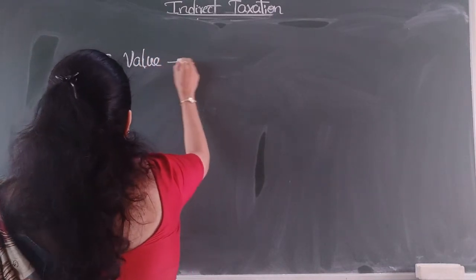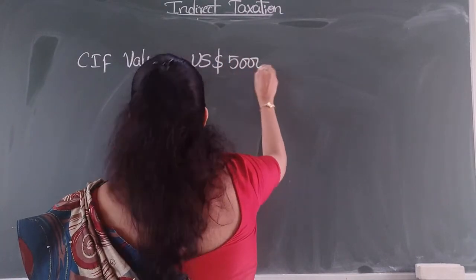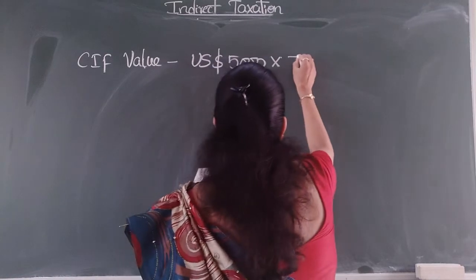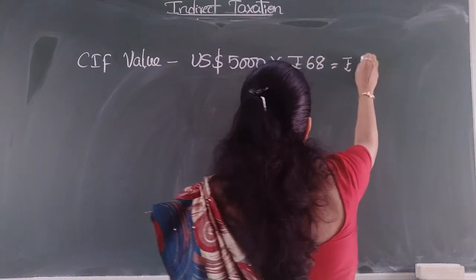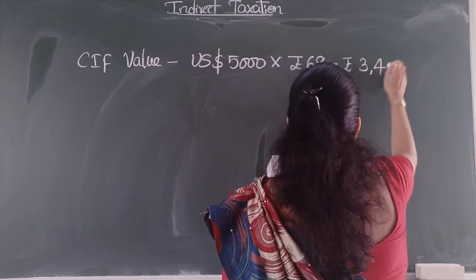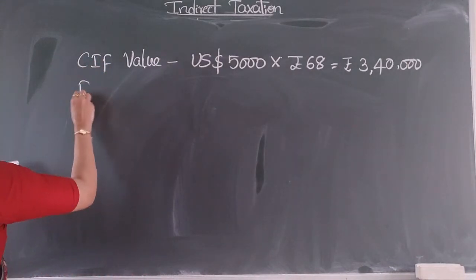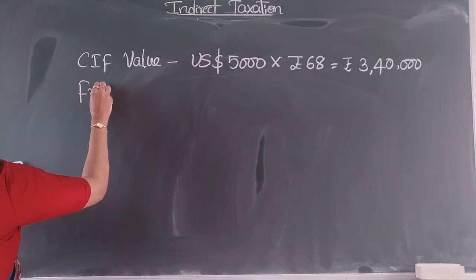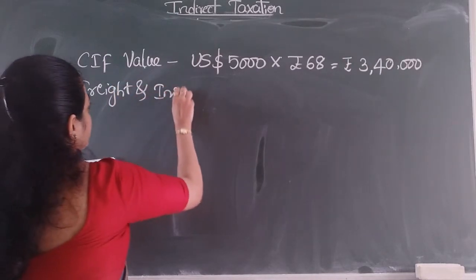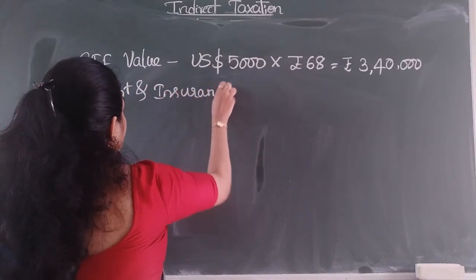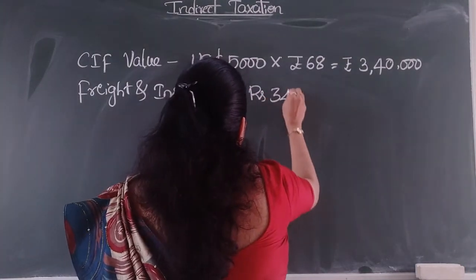CIF value given as US dollar five thousand multiplied by CBIC rate of rupees 68 gives you rupees 3,40,000. Freight and insurance amount to rupees 3,40,000.